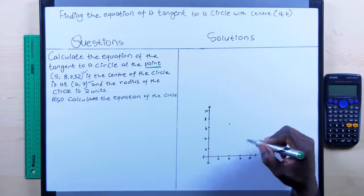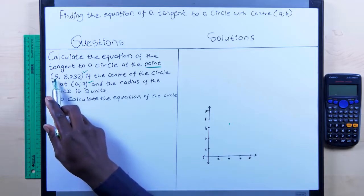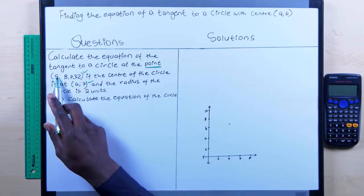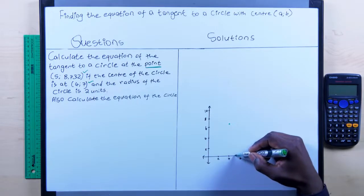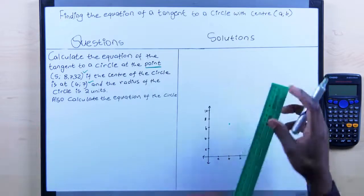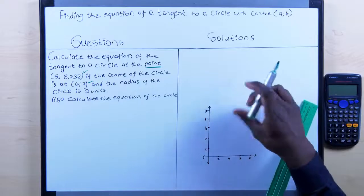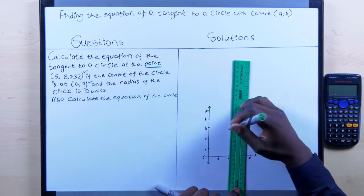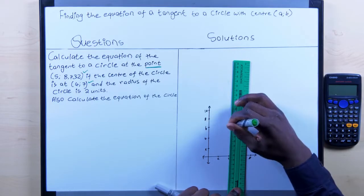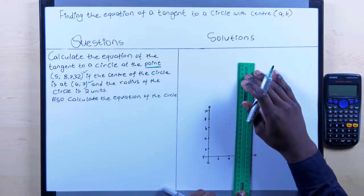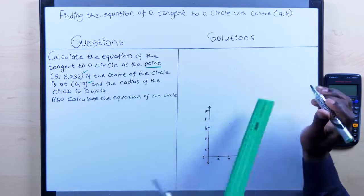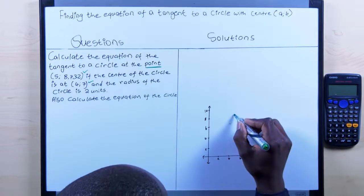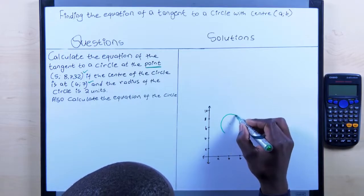We also know there is a point from the radius at x = 5 — just after the center's x-value of 4 — and y = 8.732, which is approximately 9. From the center at (4, 7) we can locate this point on the circle. The circle won't be perfect freehand, but we can demonstrate how it looks.